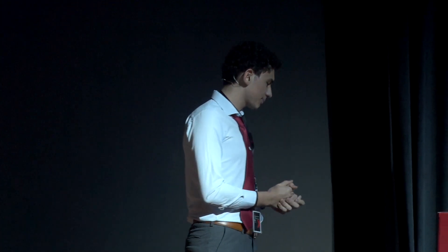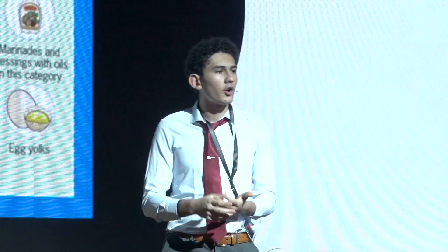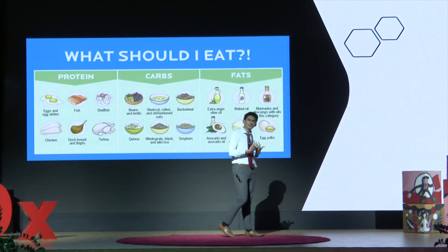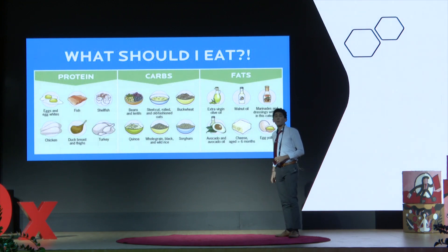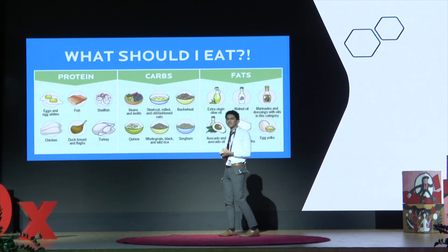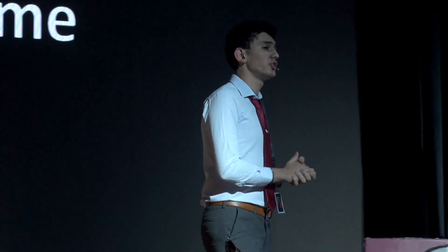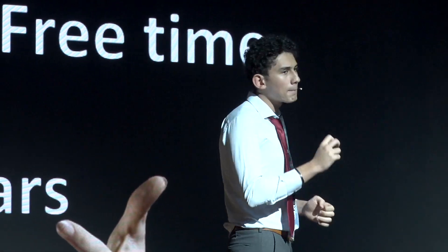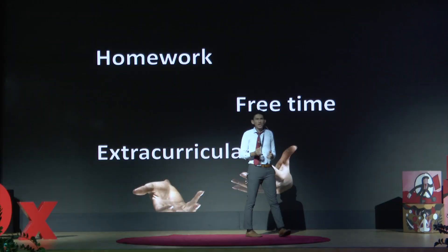An NP problem is a problem that can be verified quickly, but solving it takes much, much longer. Take your dietary choices, for example — selecting foods that meet your nutritional needs while adhering to your dietary restrictions can be quite hard and take a lot of time. But once it's done, you can easily tell that it meets your requirements. Imagine a student juggling homework, personal time, and extracurricular activities, planning their week to manage stress and ensure all tasks are completed. Verifying completed tasks is easy — checking off finished homework, for instance — but efficiently planning the week to balance everything while minimizing stress can be quite complex.